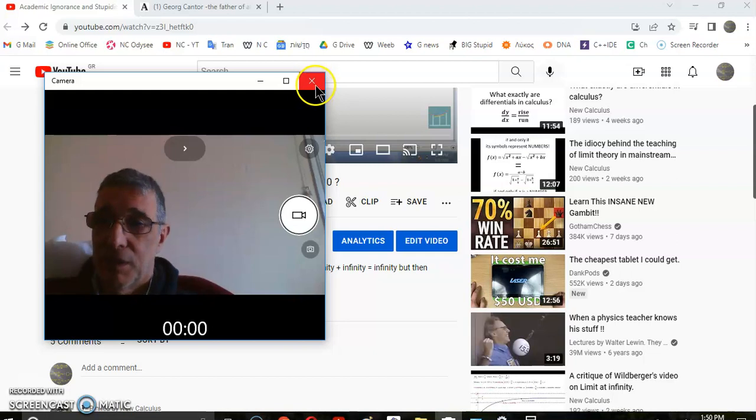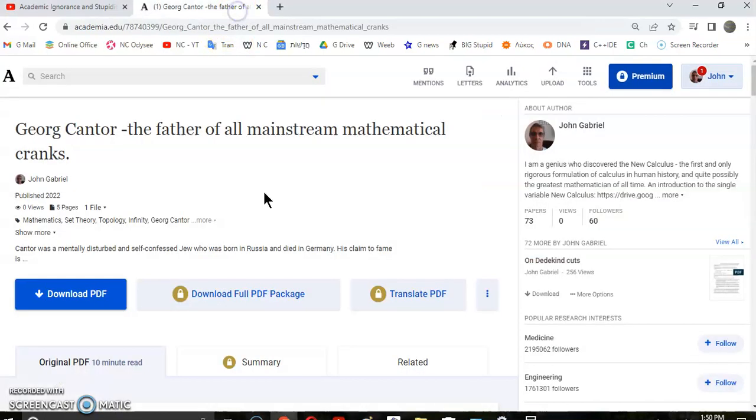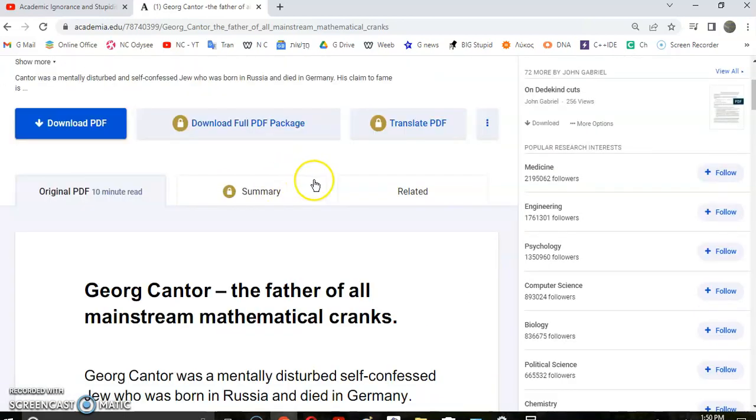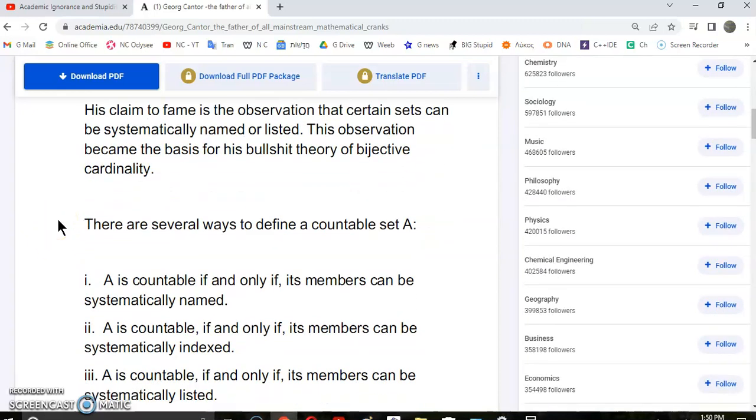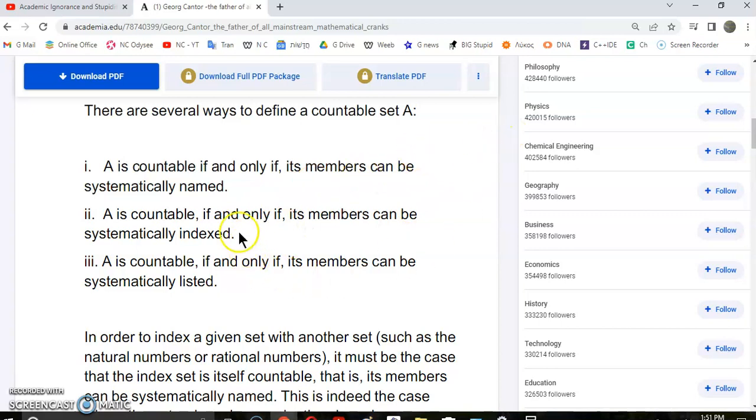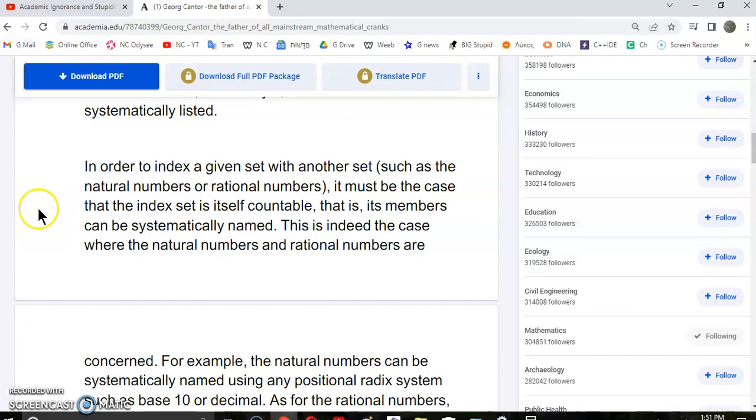George Cantor is indisputably the father of all mainstream mathematical cranks. He was born in Russia and died in Germany, and his claim to fame is the observation that certain sets can be systematically named or listed. This observation became the basis for his theory of bijective cardinality. There are several ways to define a countable set: A is countable if and only if its members can be systematically named, indexed, or listed. All these three statements are equivalent.